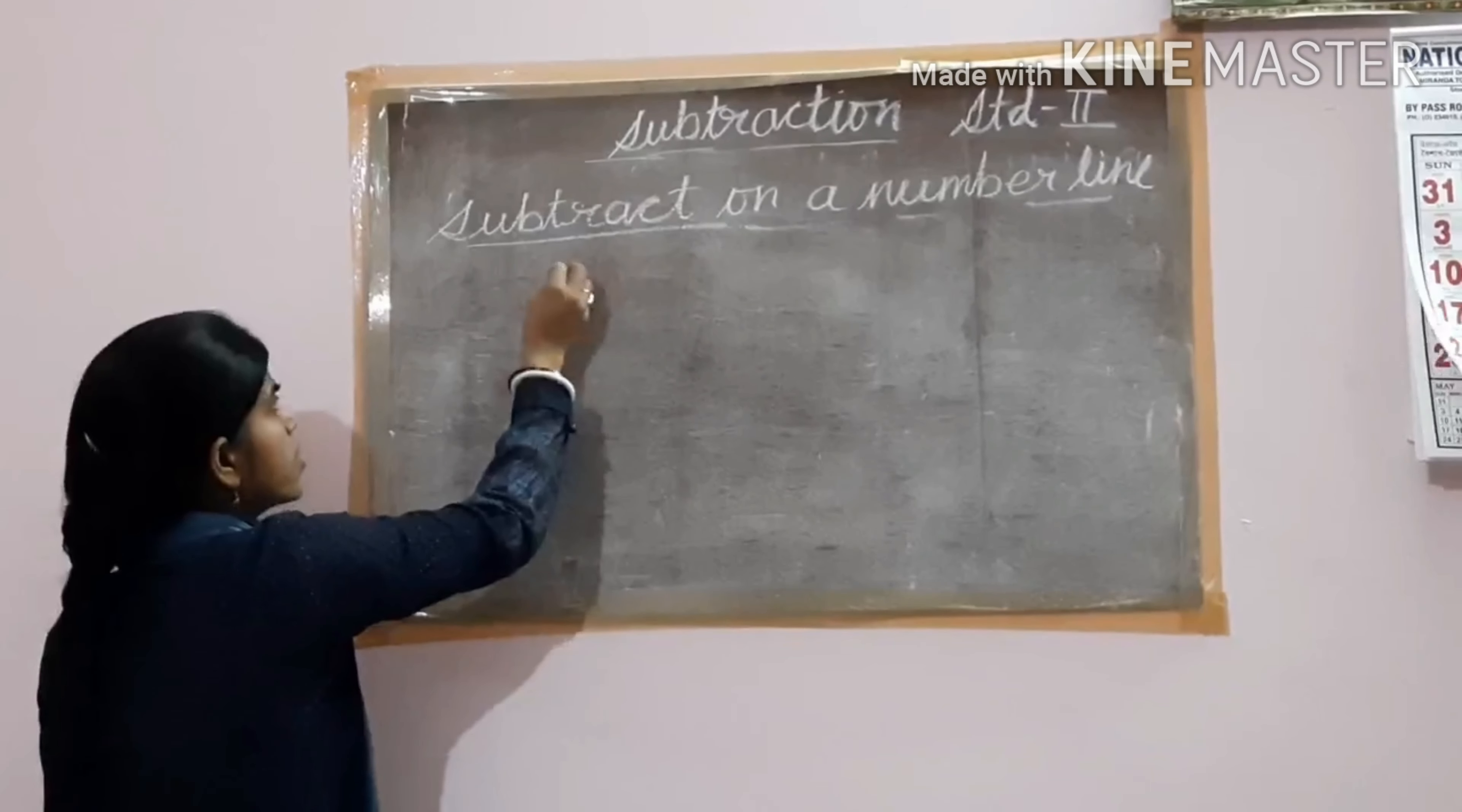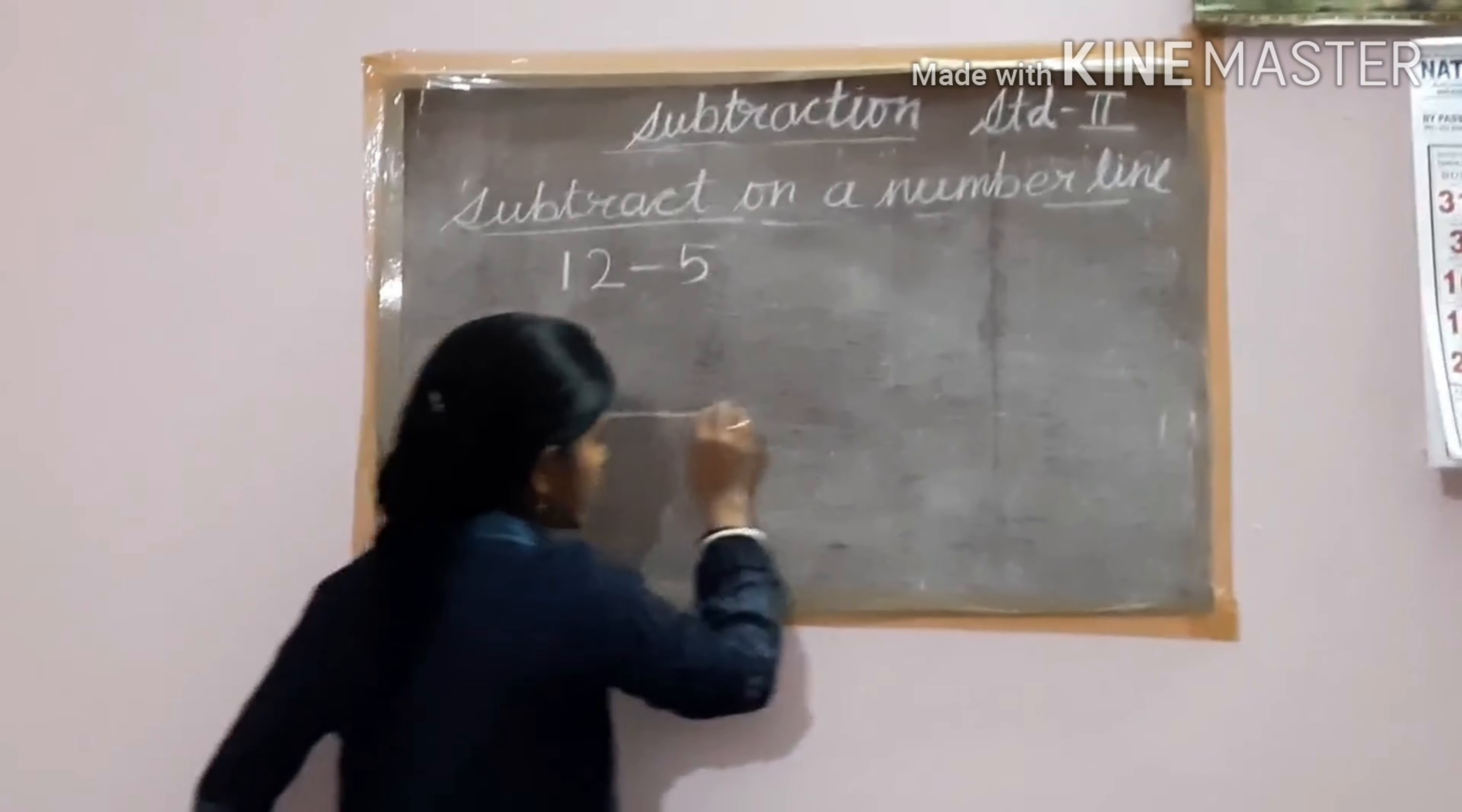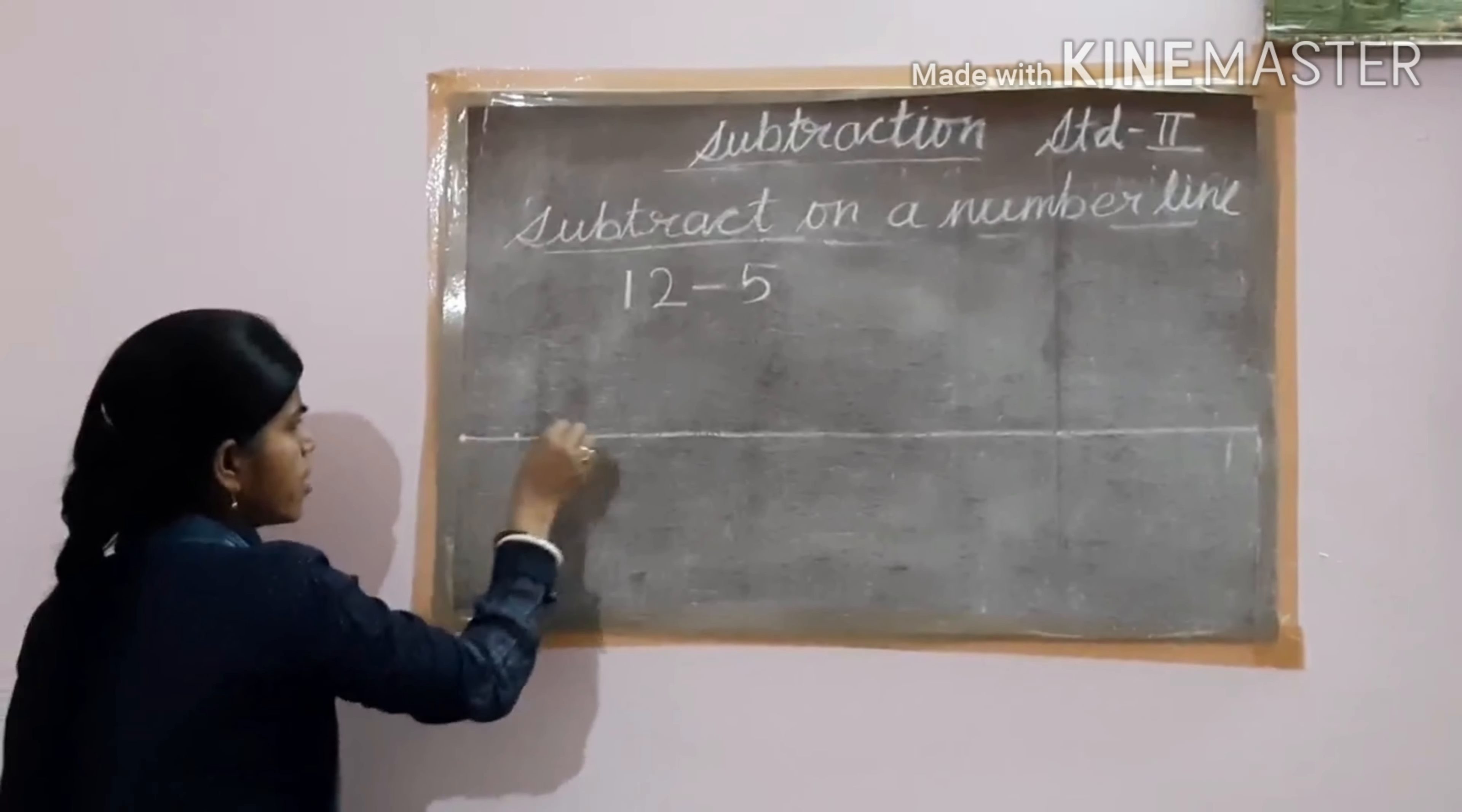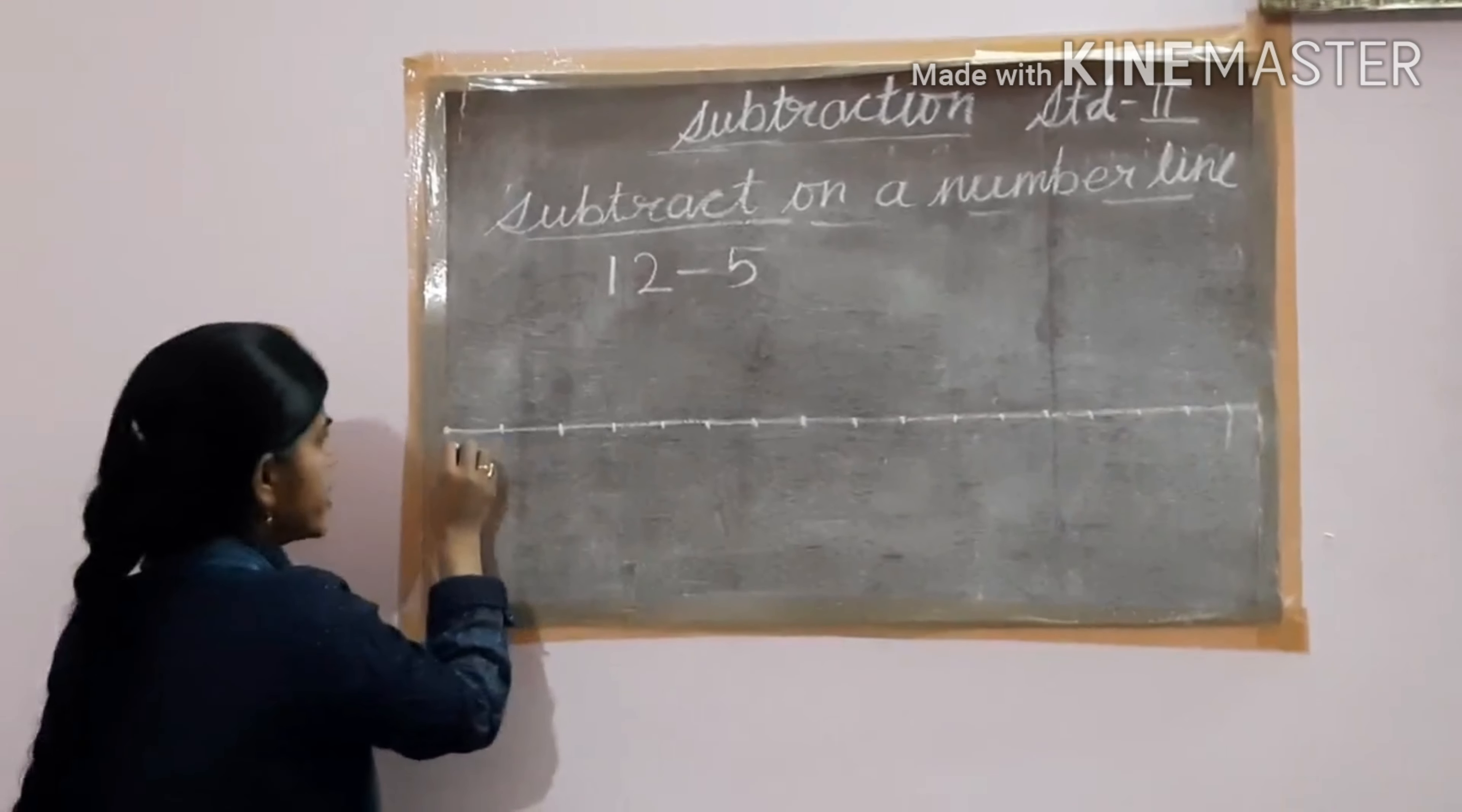Now let us first see how to do subtraction on a number line. If the question is subtract 5 from 12, 12 minus 5, how will you do? You have to draw one number line. You have to draw one straight line and then you divide this line with marks at equal intervals.